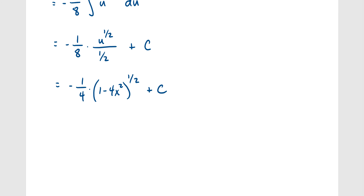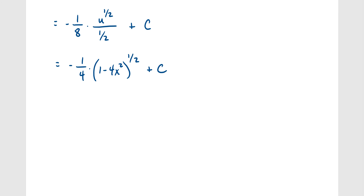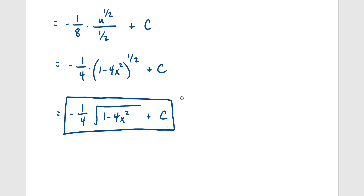Simplifying: negative 1/8 times 2 gives negative 1/4. Replacing u with 1 minus 4x²: the answer is negative 1/4 times (1 minus 4x²) to the 1/2 plus c. You can optionally rewrite the 1/2 exponent as a square root.